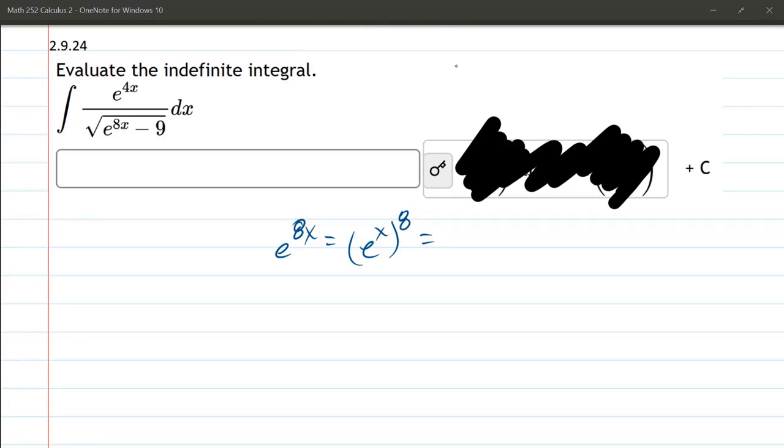We could also write it as e to the x to the 2 times 4. You could bring either the 2 inside or the 4 inside. Let's bring the 4 inside, so you can write it as e to the 4x, whole thing squared. When you see it like this, now it's the square of what's on top.